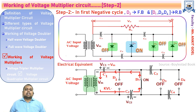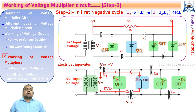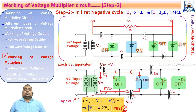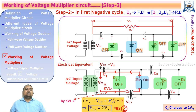In the next negative half cycle, diode D2 is in the on state and D1, D3, D4 are in the off state. In the electrical equivalent circuit, D2 is replaced by a short circuit and the other three diodes are replaced by open circuits. Applying KVL in the anti-clockwise direction via C2, D2, and C1 gives: VM − VC2 + VC1 = 0. Since C1 holds voltage VM, substituting gives VC2 = 2VM. Capacitor C2 holds the voltage 2VM for the next cycles.